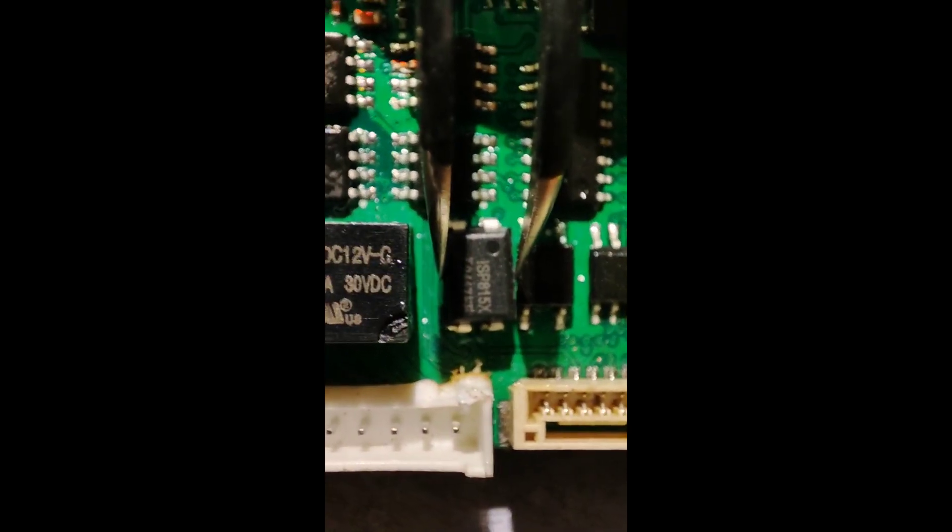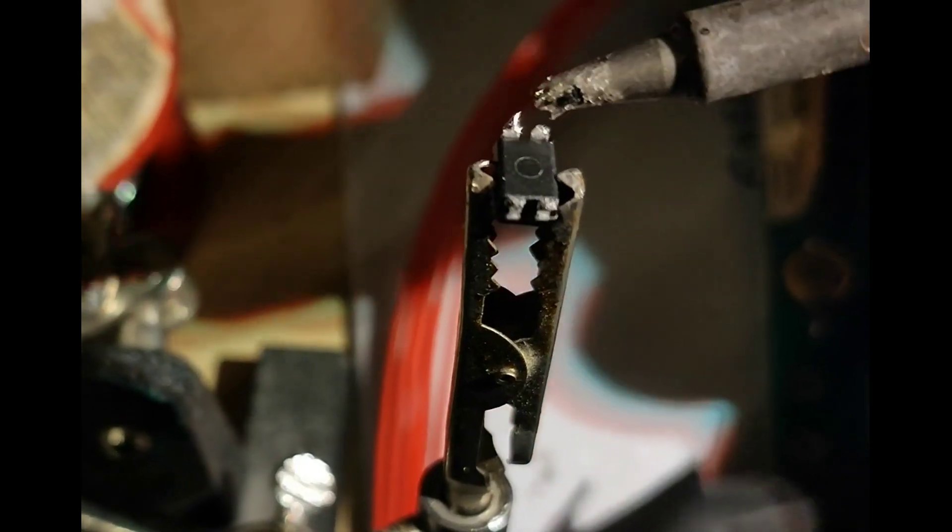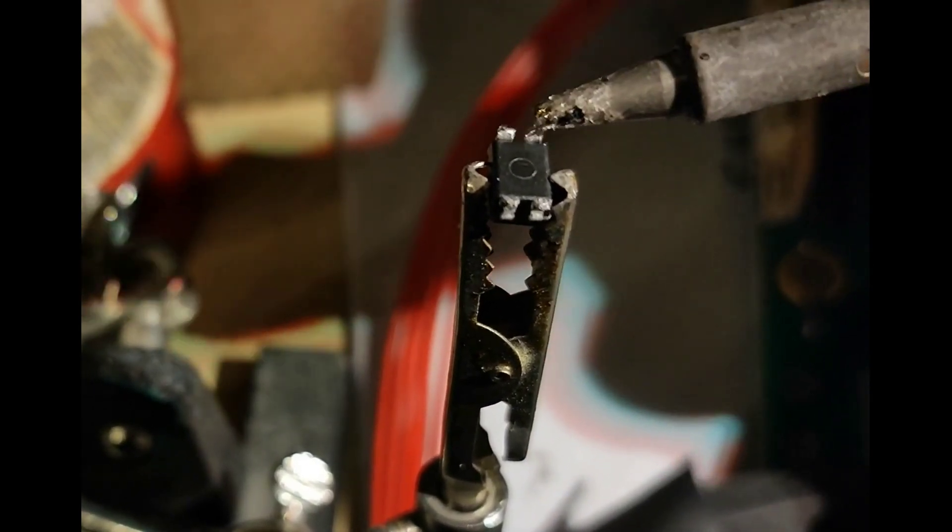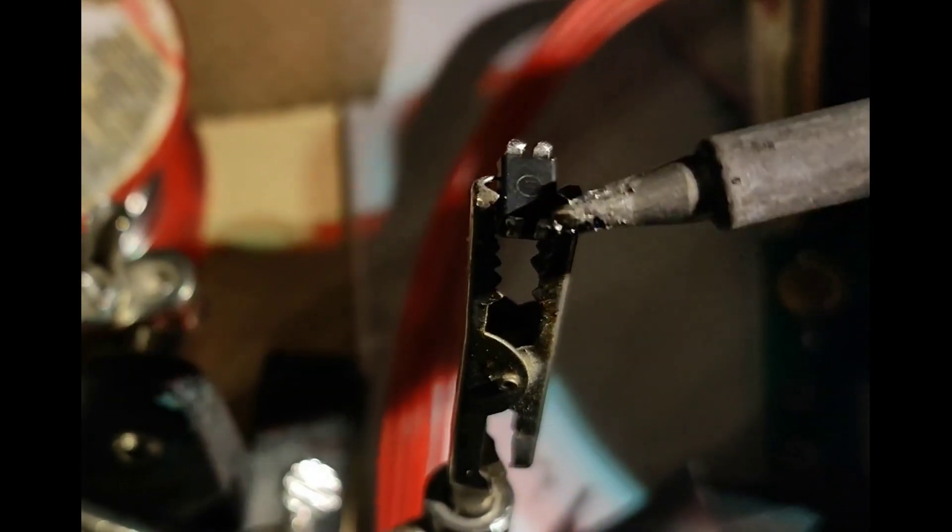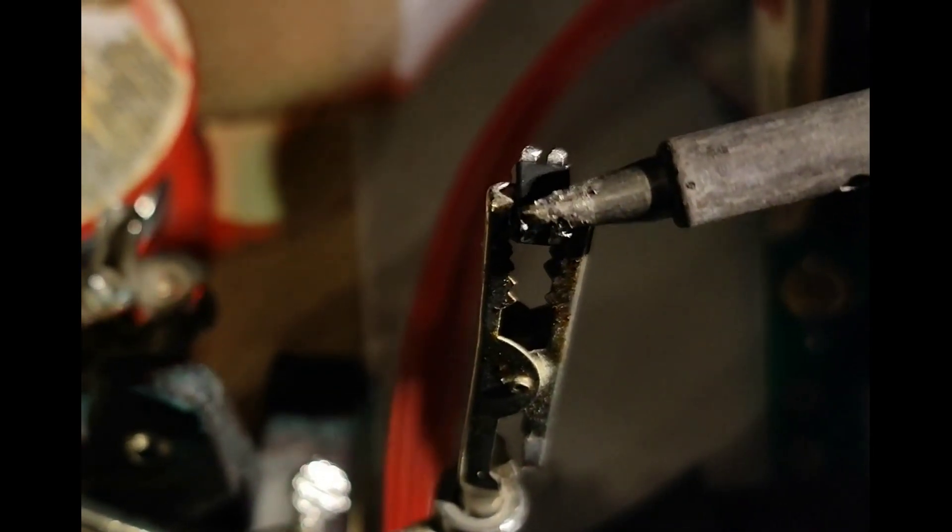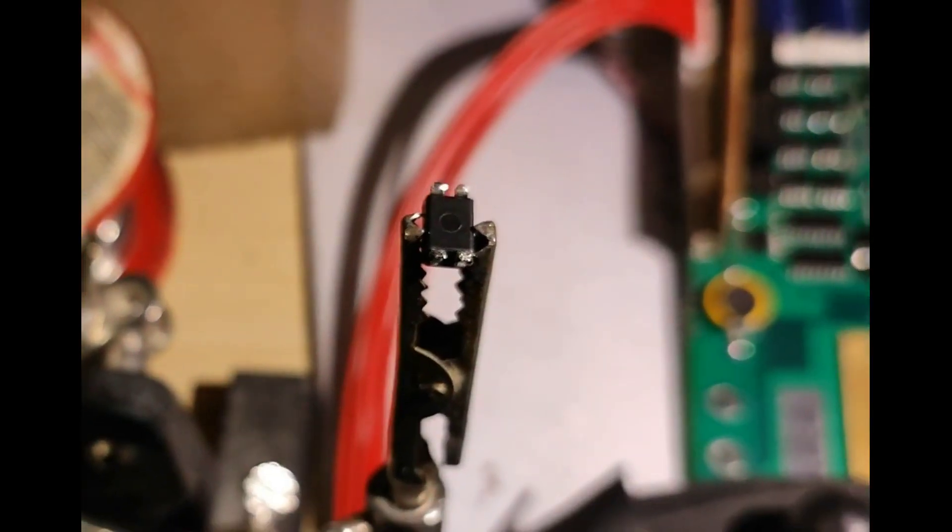For soldering SMD components normally you use solder paste, and they get sucked into the right spot when you heat it up. But in this case I just used regular solder wire and wetted the pins of the component a bit before placing them. Given the size of the component and the mismatch between solder pads and pins, positioning was a bit delicate, but it turned out fine in the end.